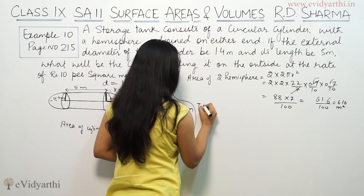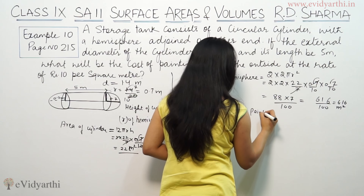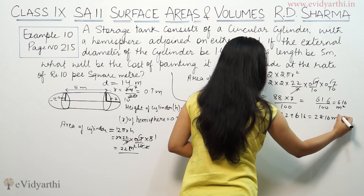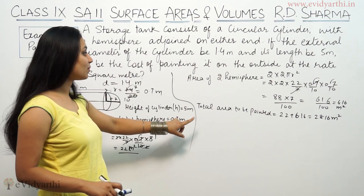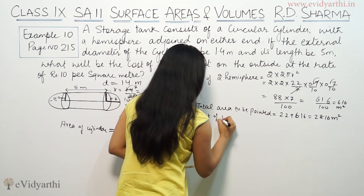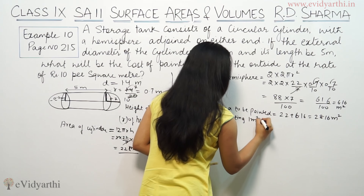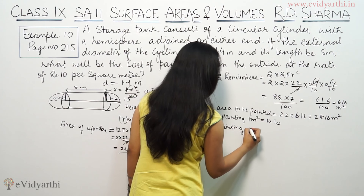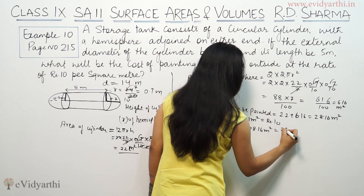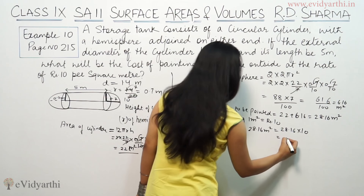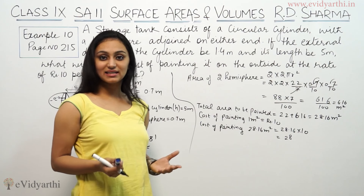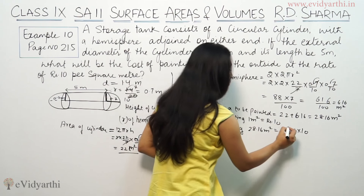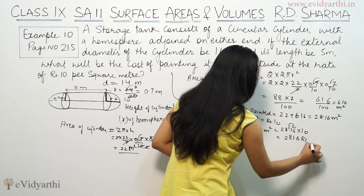Now, the total area to be painted equals 22 plus 6.16, which is 28.16 square meters. The cost of painting 1 square meter is rupees 10, so the cost of painting 28.16 square meters will be 28.16 × 10. Shifting the decimal point one place to the right, that equals rupees 281.6. This is the total cost of painting.